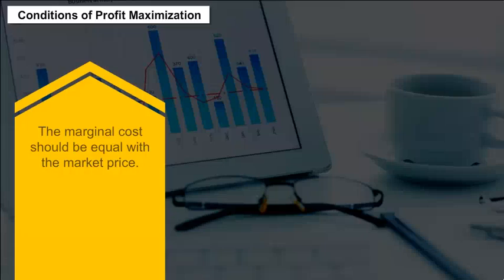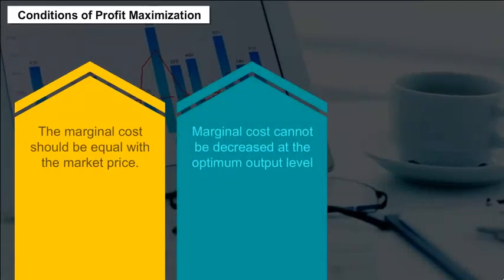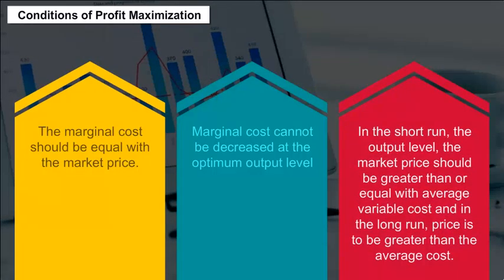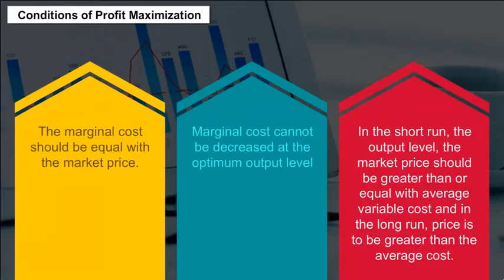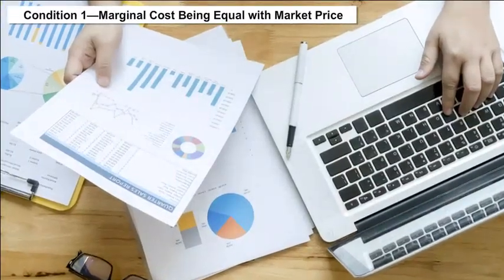First, the marginal cost should be equal to the market price. Second, the marginal cost cannot be decreased at the optimum output level. Third, in the short run, the market price should be greater than or equal to the average variable cost. And in the long run, price is to be greater than the average cost.